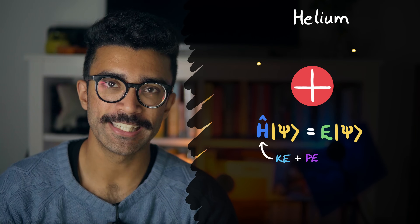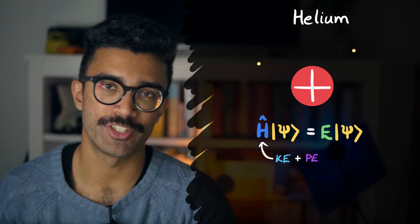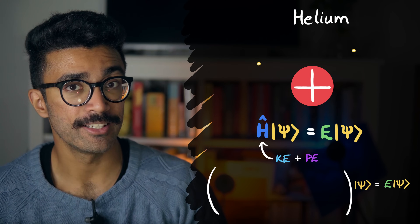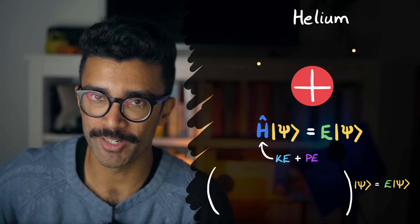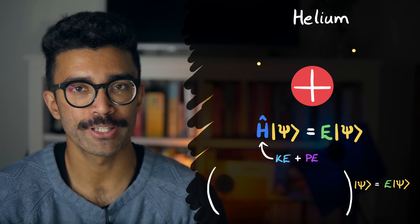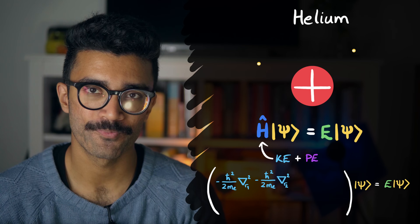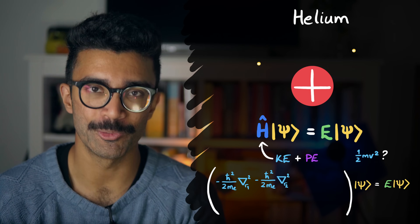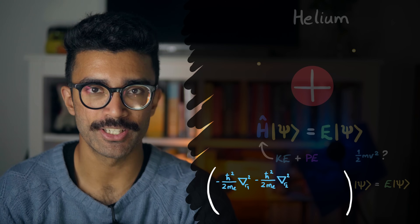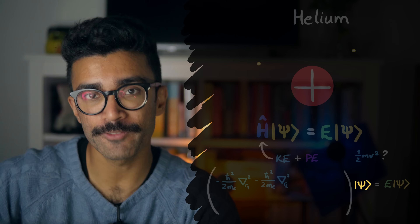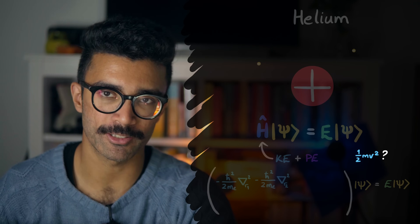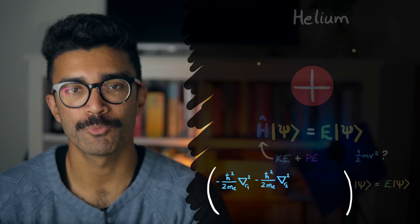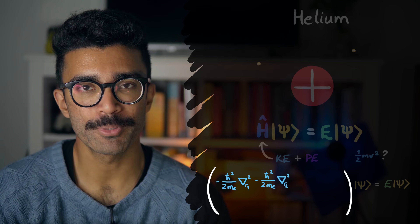To construct the Schrödinger equation for this model of the helium atom, recall that the Hamiltonian H represents the kinetic energy of all particles in the system plus all the potential energies. Since we assume the nucleus is stationary at the center, we don't need to include its kinetic energy — we only account for the kinetic energies of electron one and electron two. These terms don't look like the usual ½mv² kinetic energy, but they are used to find kinetic energy specifically from the wave function we get when we solve the equation.